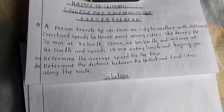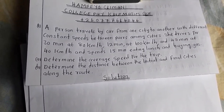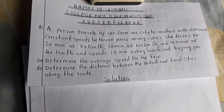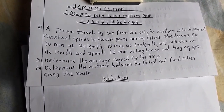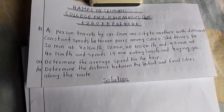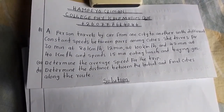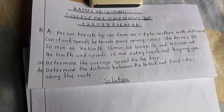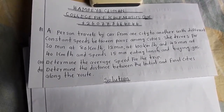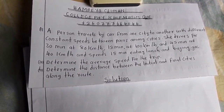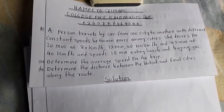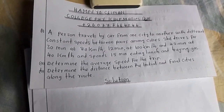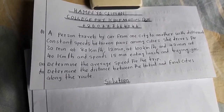Good morning everyone, I bring you a tutorial today in physics — Physics 101. For those of you that have not yet subscribed to my YouTube channel, make sure that you subscribe. The question is simply saying: a person travels by car from one city to another with different constant speeds between pairs of cities.